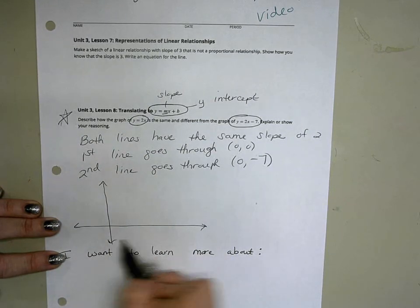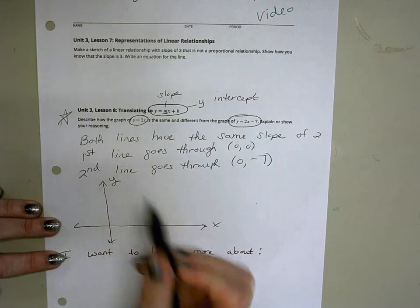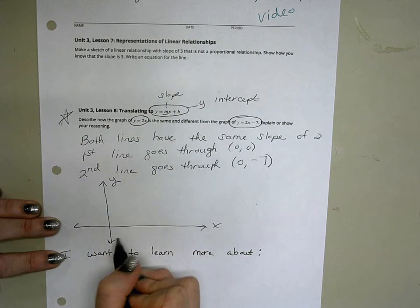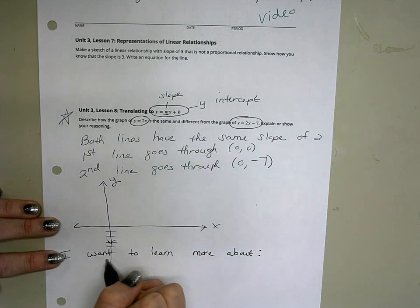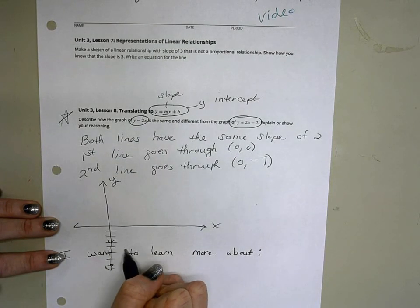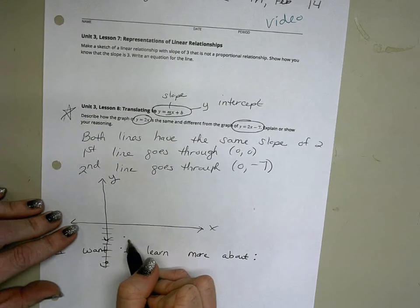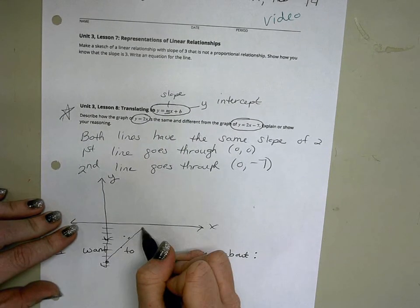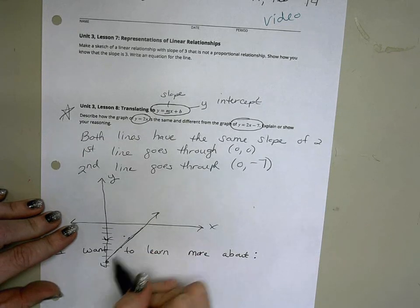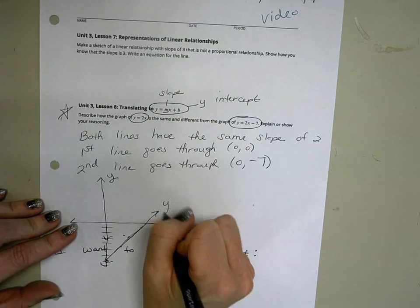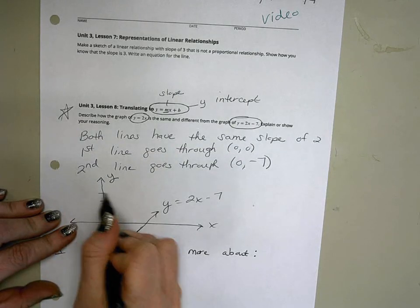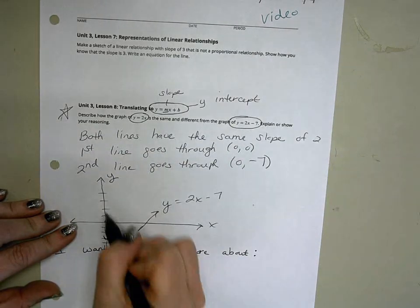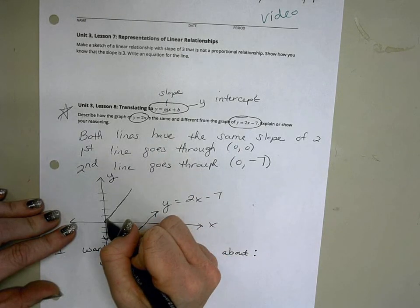Here is my x-axis and my y-axis. They're both going to have a slope of 2. The second line is going to start here and then I'm going to have up 2 and over 1, up 2 and over 1. So sketching it, this is my y equals 2x minus 7, whereas my first line is going through the origin and is going to be parallel, so it's going to look more like this.